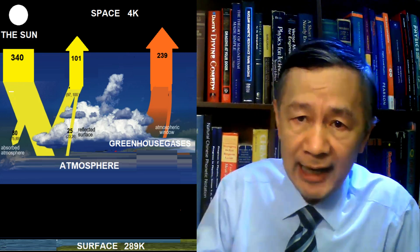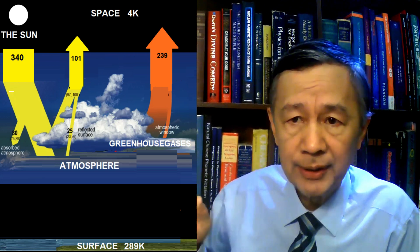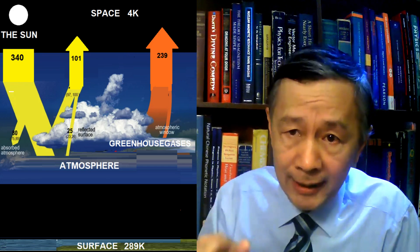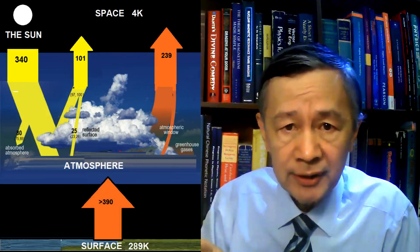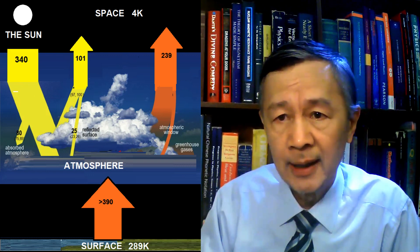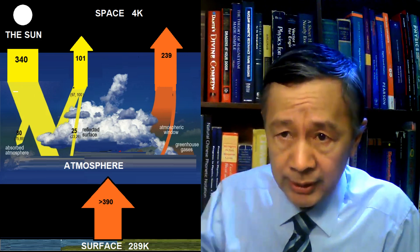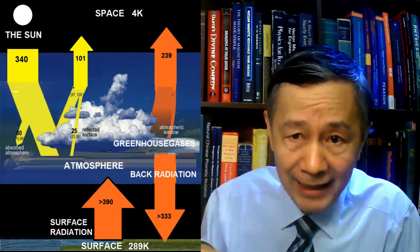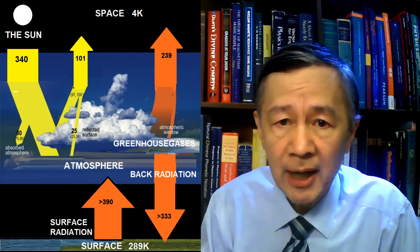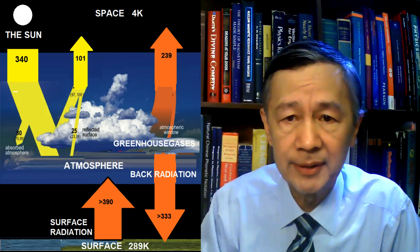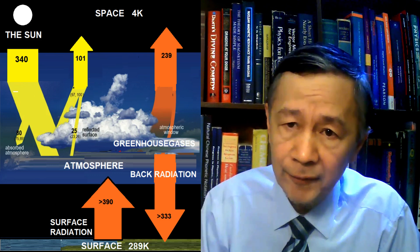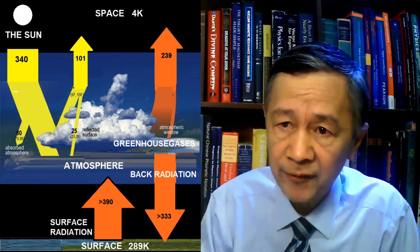Now let's focus on the gap of the vacuum between the surface and the atmosphere. You can see one big arrow upward, which denotes the assumed surface infrared radiation at 390, and a downward arrow that represents the back infrared radiation of 333, calculated based on the greenhouse effect hypothesis. As a result, the net infrared radiation from the surface is just 57.